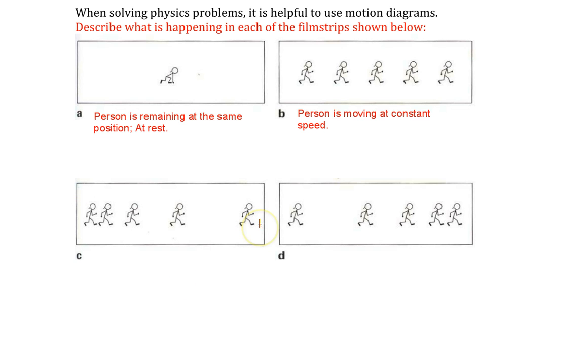What about picture C now? Hopefully you wrote down the person speeding up. And the reason for that is you can see that the distance is getting bigger and bigger over time.